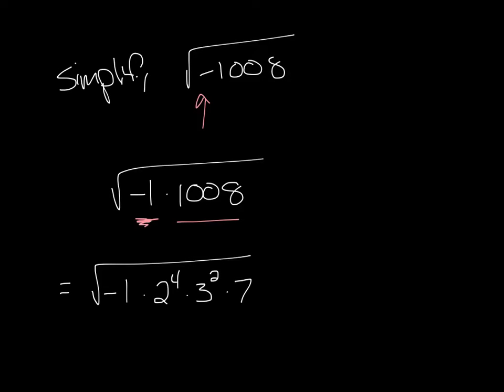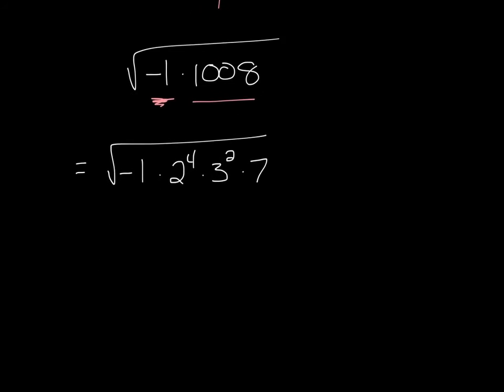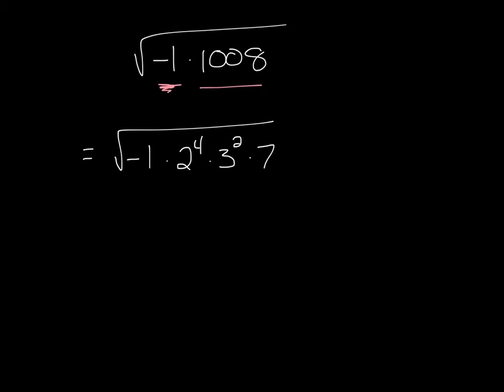So now I'm going to simplify this expression by taking the square root of the factors that I can, and in order here, the square root of negative 1, that's what gives me the i.